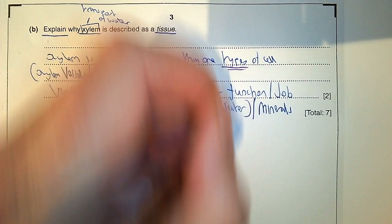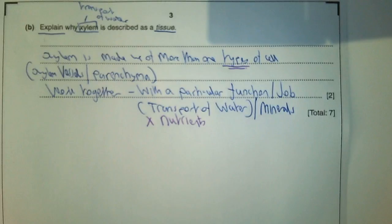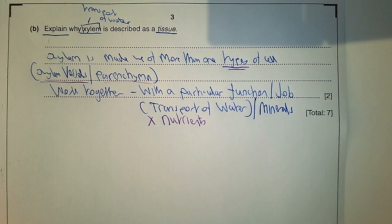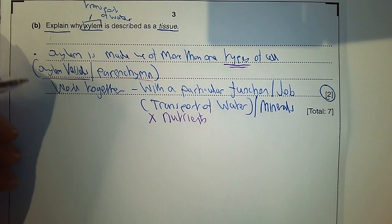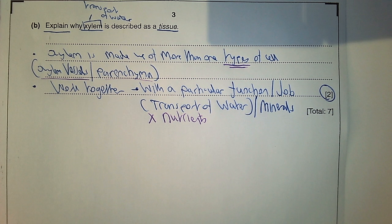You don't have to give examples of tissue types, and this is worth two marks so we need two of those three bullet points.